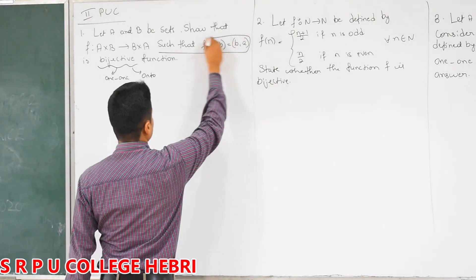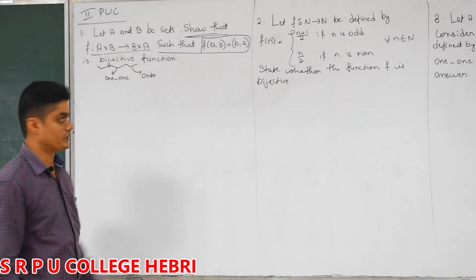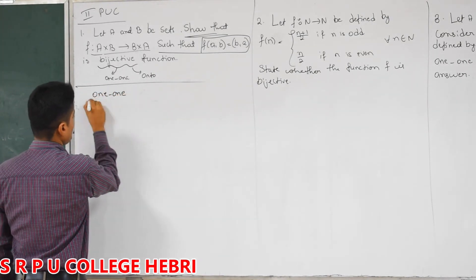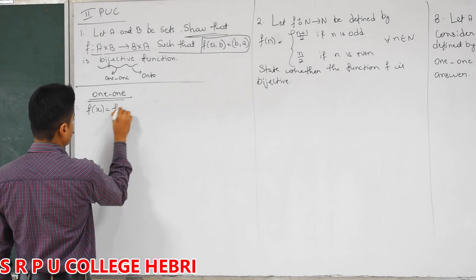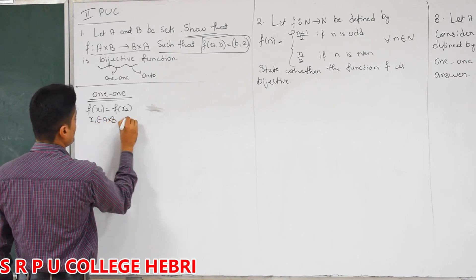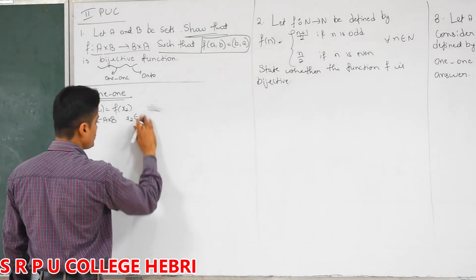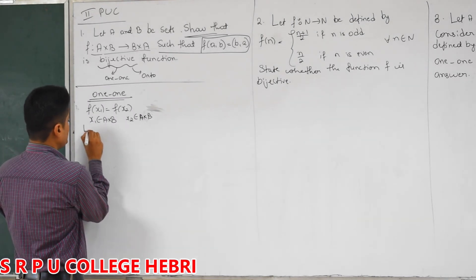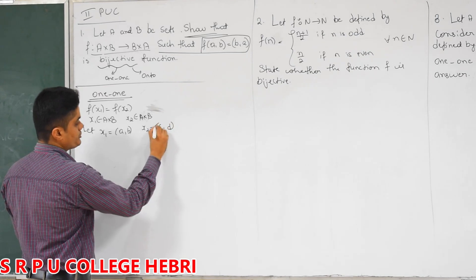Now, we have to show that it is a bijective function from — okay, it is a different set. You will get a set, here we have a cross product. So first we will verify whether it is one-one or not. The method is the same which we used in the previous problems. Here, let us assume the images are equal. x1 belongs to A cross B, x2 belongs to A cross B. So I am going to take x1 as (a, b) and x2 as (c, d) because it should be an ordered pair.